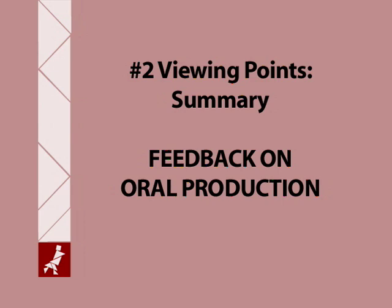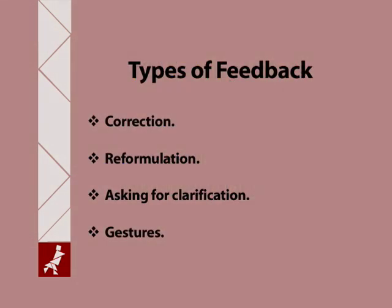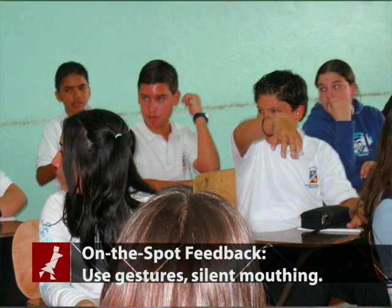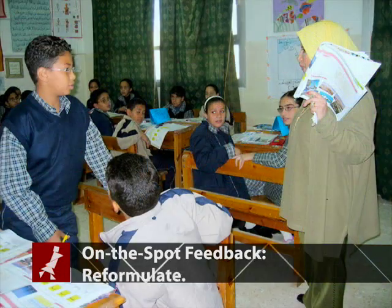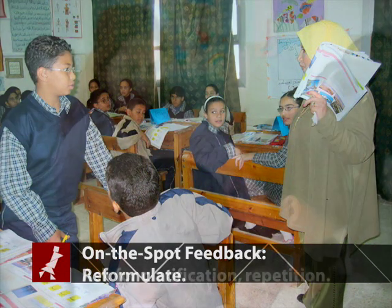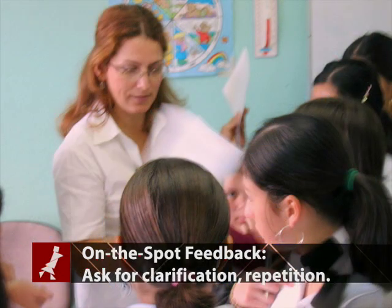Summary: We saw examples of students helping retell a story about a canoe ride and catching a fish with a million dollars in it. The teacher used a blend of correction, reformulation, and asking for clarification techniques. She and the students also used gestures to help the speaker continue. On-the-spot correction techniques are useful for giving feedback while a student is performing. Examples include using gestures or silent mouthing, offering a quick correction, reformulating, and asking for clarification or repetition.